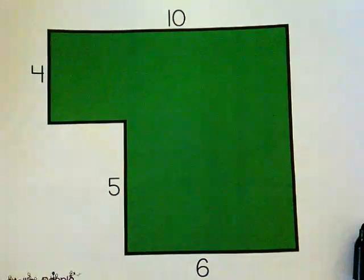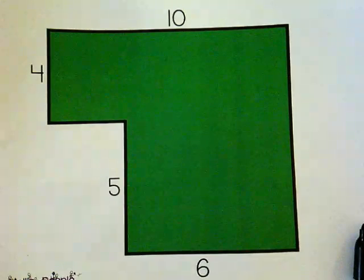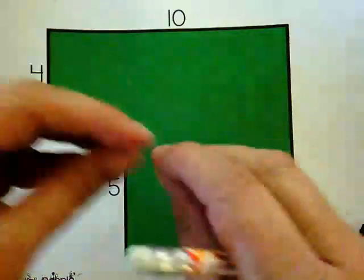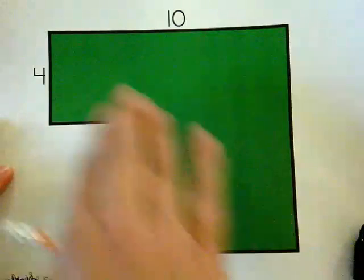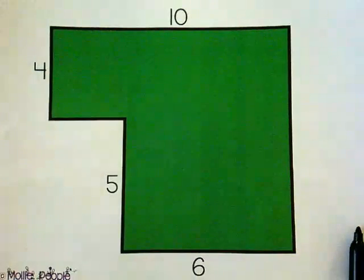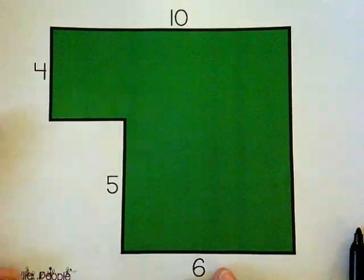Hi everybody. So today we are still working with area and we are working on area of a composite figure. Composite means taking one thing and adding it to another. So like in this instance we took one rectangle and we've added it to another rectangle, but we need to find the area of it.